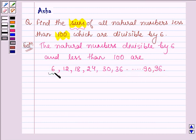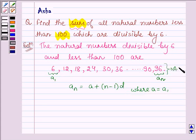Now, 6 is the first term and 96 is the nth term. We know that a_n is given by a plus (n minus 1) into d, where a is equal to a₁, which is the first term of the AP series. This is an AP series. As we can see, the common difference between each of these terms is 6, which is the common difference. Here it is equal to 6.